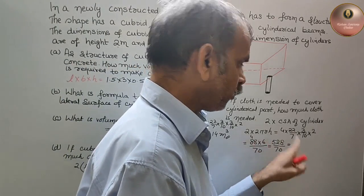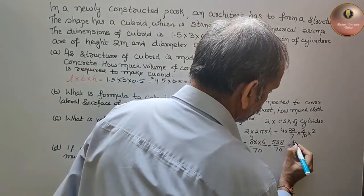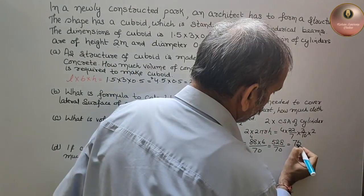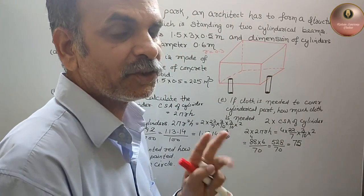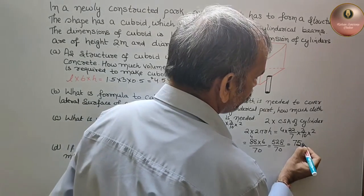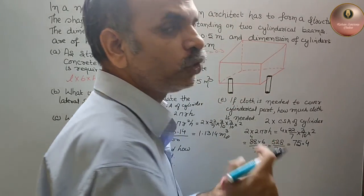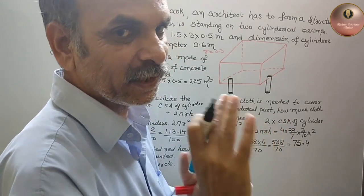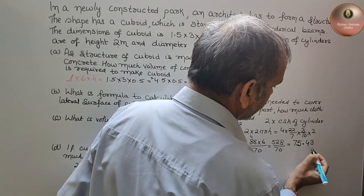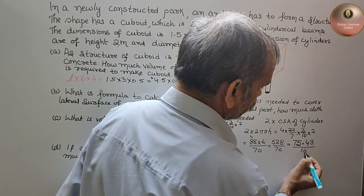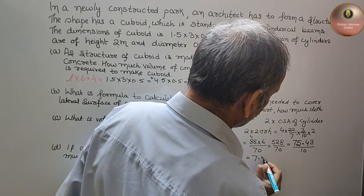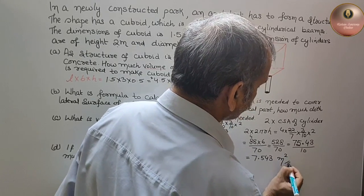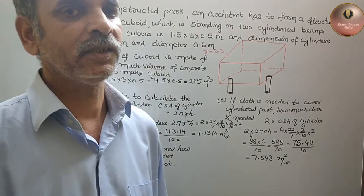Dividing 528 by 7: 7 goes 7 times into 49, remainder 3; then 38 means 5 times; remainder 3, giving 0. Continuing the division: approximately 7.543. Dividing by 10 gives 7.543 divided by 10, so we can say the cloth needed is approximately 7.543 meter square. So that is how much cloth you need.